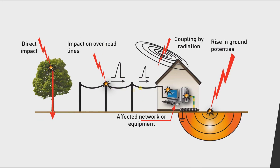A lightning strike can hit a transmission line, leading to overvoltage in overhead lines connected to our equipment. Our equipment is also earthed to the ground, which is normally zero. But if the lightning hits the ground, it raises the ground potential, causing overvoltage on connected equipment. Additionally, both the line and ground strikes produce electromagnetic fields that can induce voltage in our cables through electromagnetic radiation coupling.